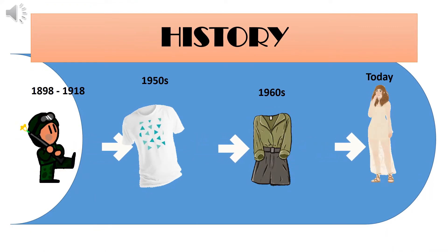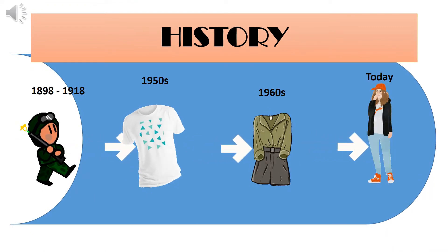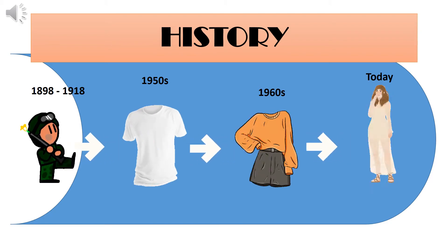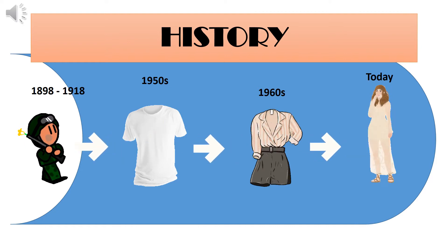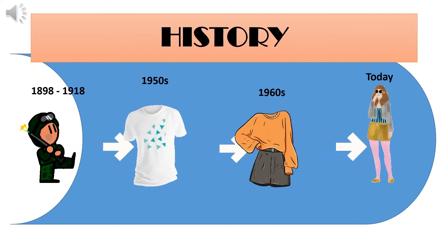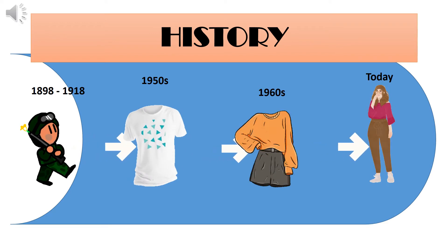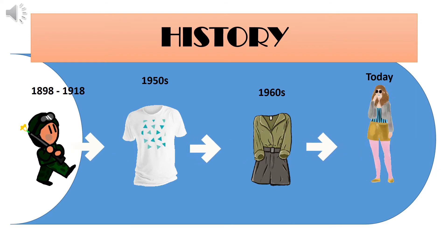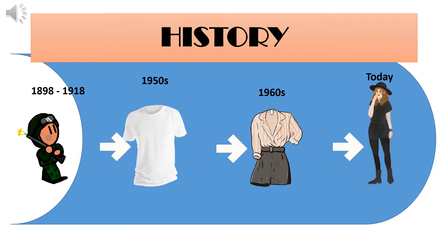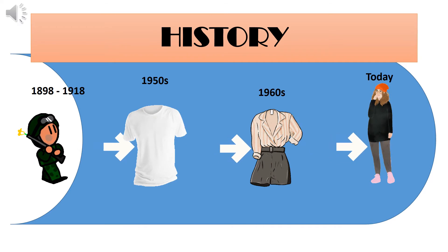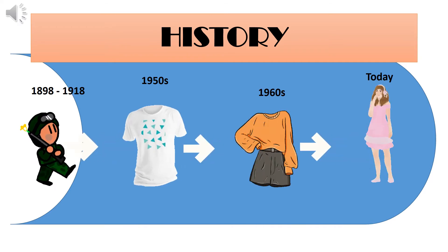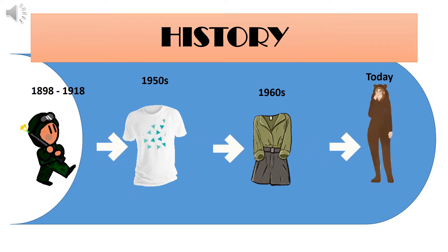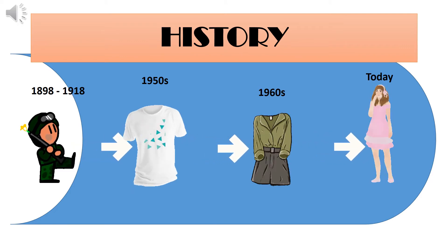From 1898 to 1918, the U.S. Navy distributed the t-shirt as an undergarment when wearing a uniform. In the 1950s, printed t-shirts were introduced and most veterans wore them as outerwear paired with slacks or jeans. In the 1960s, t-shirts gained popularity as advertisement, souvenirs, or self-expression with words, images, and logos. Today, t-shirts are available in various designs, colors, and styles.